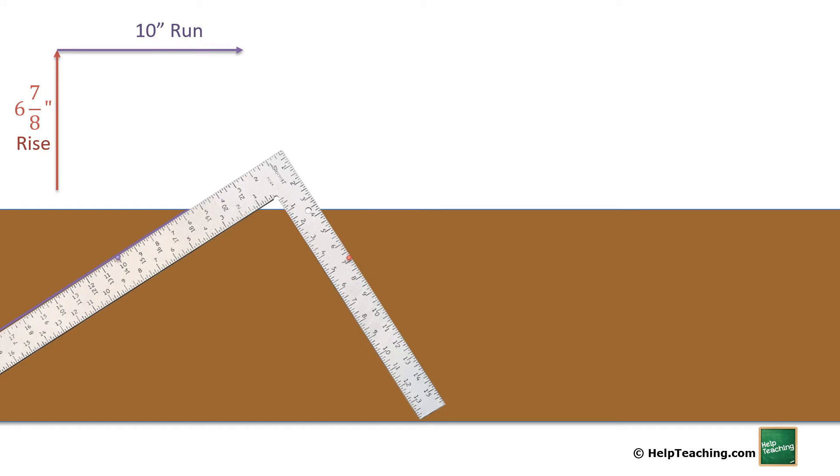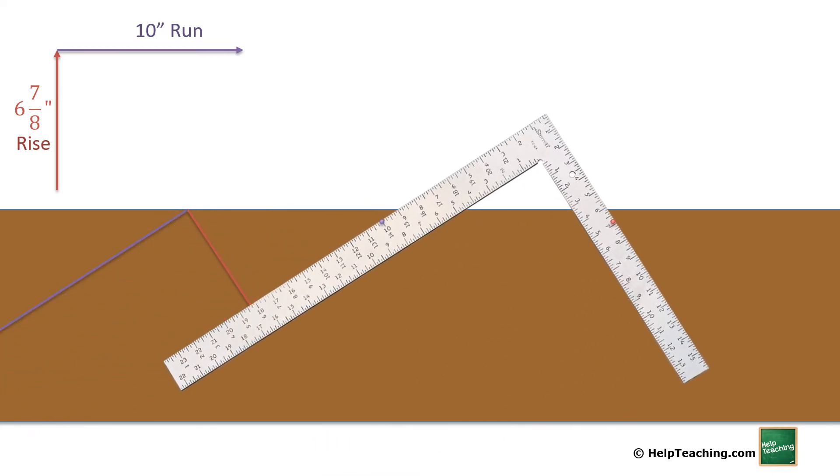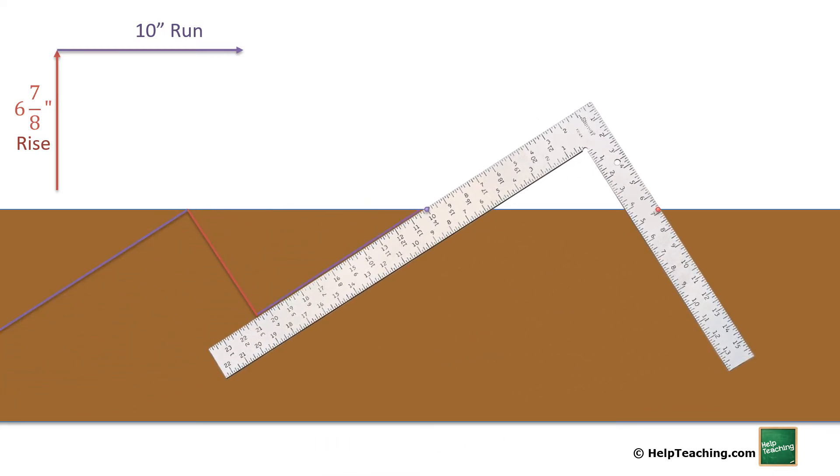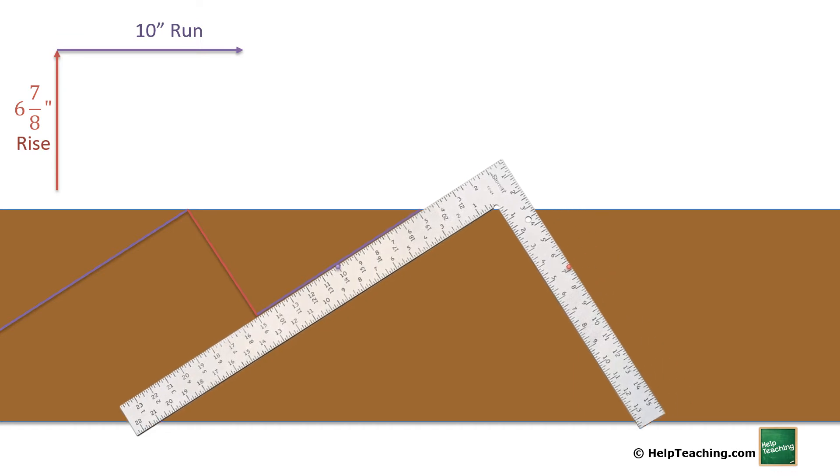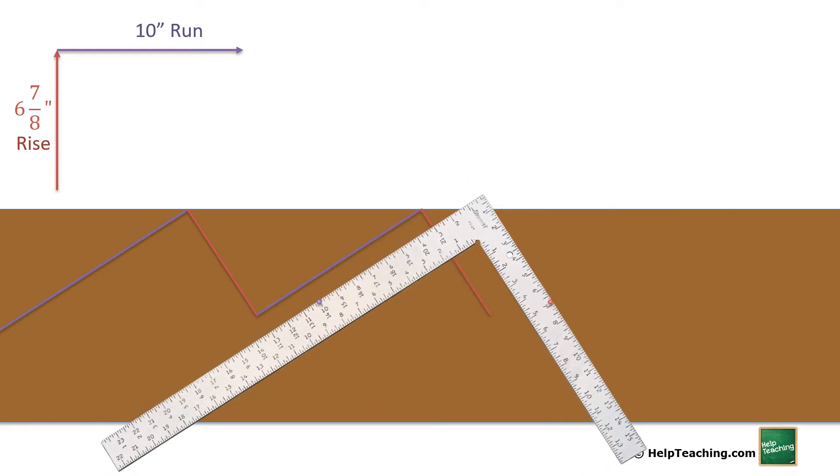Slide the square up. And we can mark down what's going to be our first riser. We can slide the square forward and repeat the process for our next tread. Slide it back for our next riser. Our next tread. And so on.